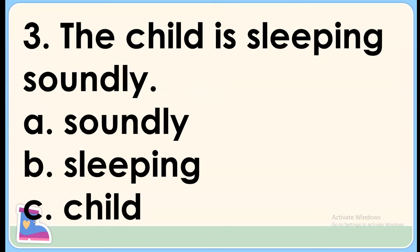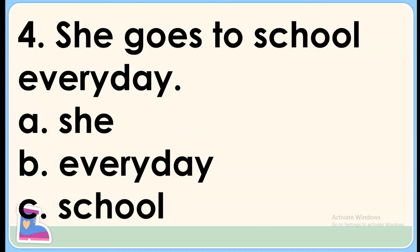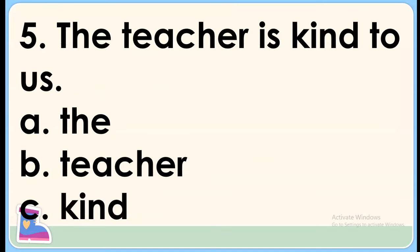Next, number three: the child is sleeping soundly. The noun here is child. Number four: she goes to school every day. The noun here is school. And number five: the teacher is kind to us. The noun here is teacher.